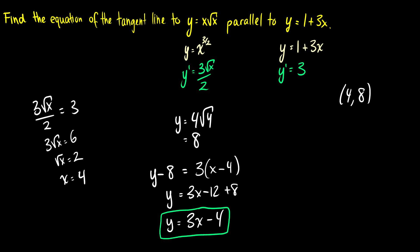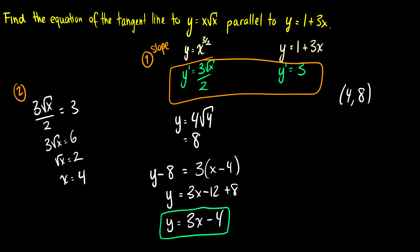To review the steps for the parallel tangent line problem: first, find the slope of the given line and set it equal to the derivative of the curve. Second, solve for x. Third, find the corresponding y value on the curve. Finally, use those values to find the equation of the tangent line. Whether you use the power rule, quotient rule, product rule, or chain rule, it's always the same procedure. If you get the procedure down, you'll be good to go. Leave any questions in the comments below.